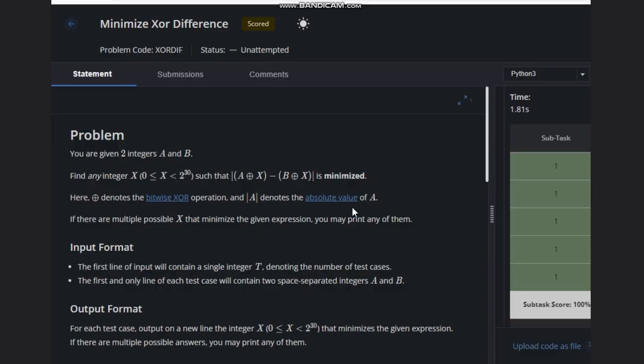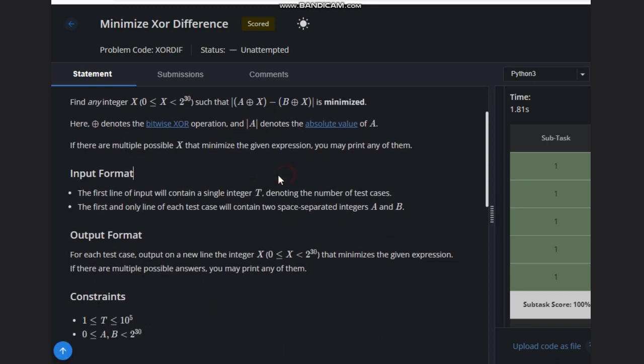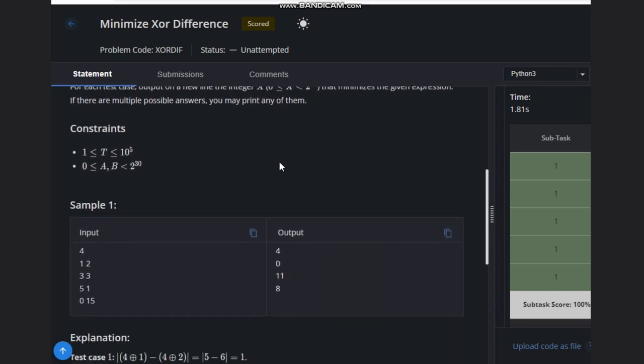Hello, welcome back to our YouTube channel. Today we are going to see the Minimize XOR Difference problem from CodeChef. We are given two integers A and B, and we need to find X such that the difference |A XOR X - B XOR X| is minimized. We need to find X, and there are many possible values, so you can print any one of them.